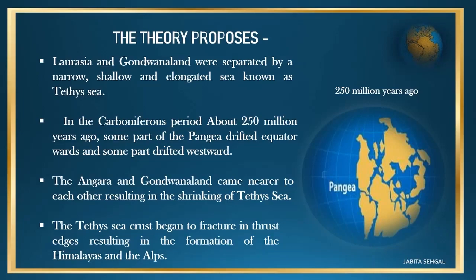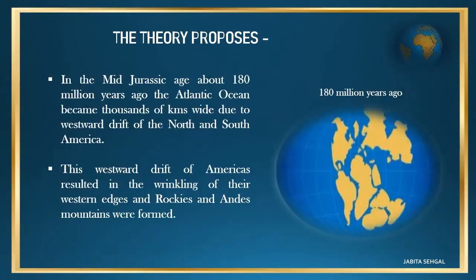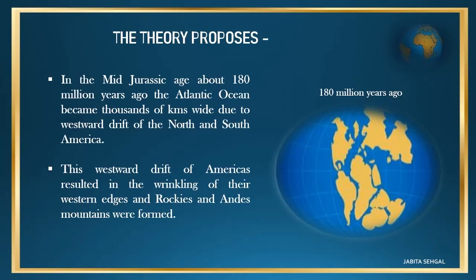The Tethys Sea crust began to fracture at its edges, resulting in the formation of the Himalayas and the Alps mountains. In the mid-Jurassic age, about 180 million years ago, the Atlantic Ocean became thousands of kilometers wide due to westward drift of North and South America. This westward drift of the Americas resulted in the wrinkling of their western edges, and the Rockies and Andes mountains were formed.